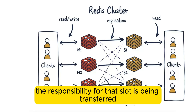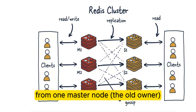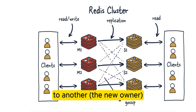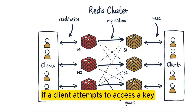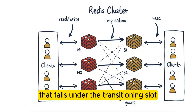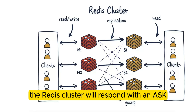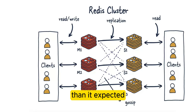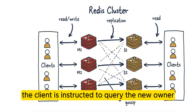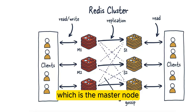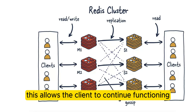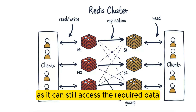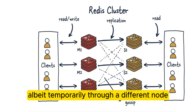When a slot is in transition, it means that the responsibility for that slot is being transferred from one master node — the old owner — to another, the new owner. During this transition, if a client attempts to access a key that falls under the transitioning slot, the Redis cluster will respond with an ASK redirection. This means the client is informed that the key is currently managed by a different master node than expected. The client is instructed to query the new owner, which is the master node now responsible for the slot, allowing the client to continue functioning without interruption as it can still access the required data, albeit temporarily through a different node.